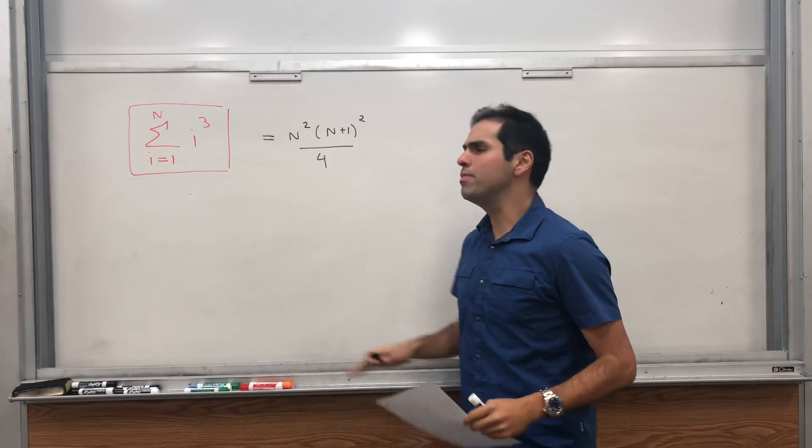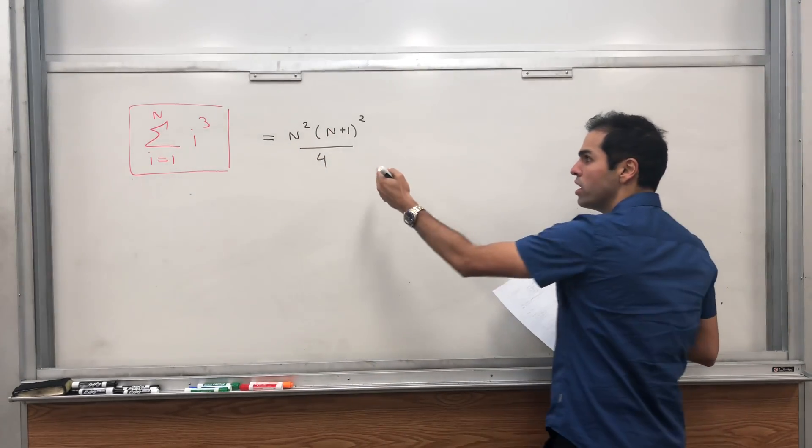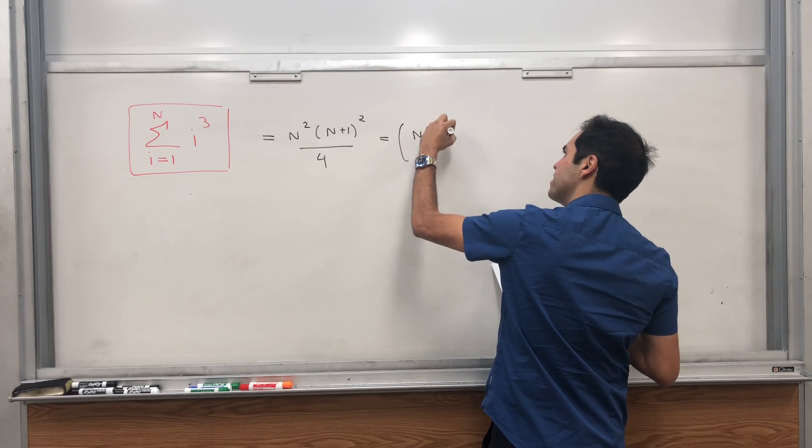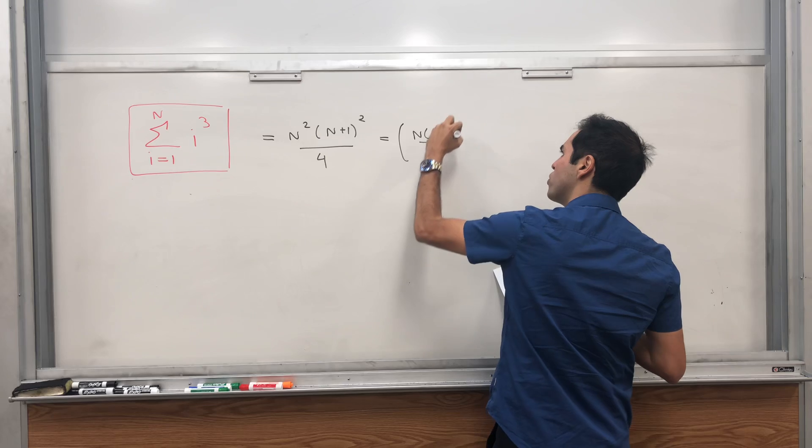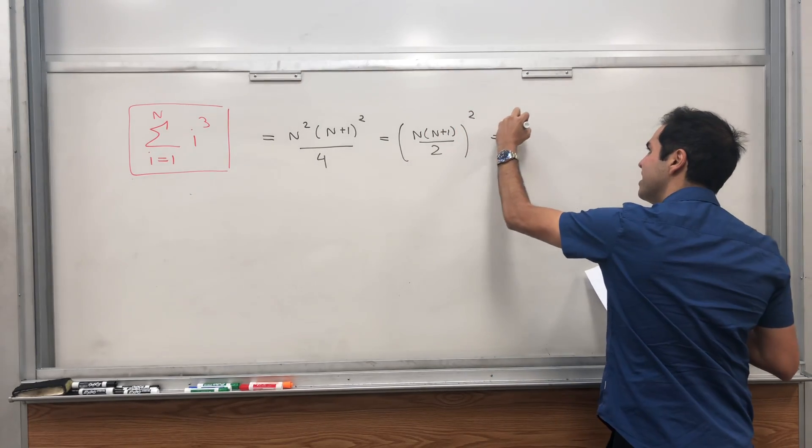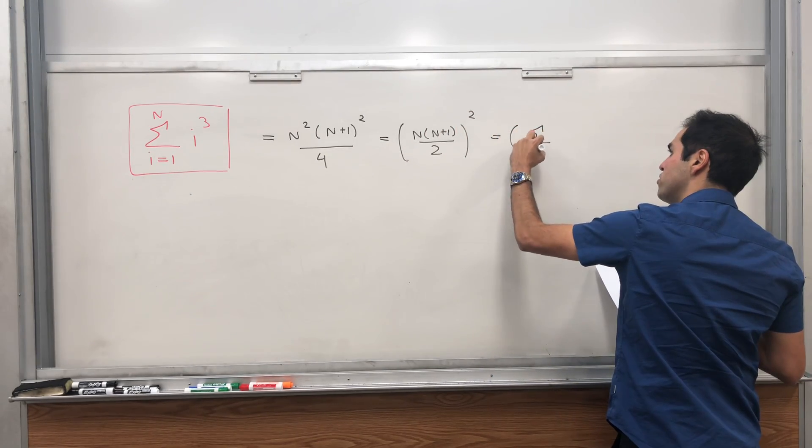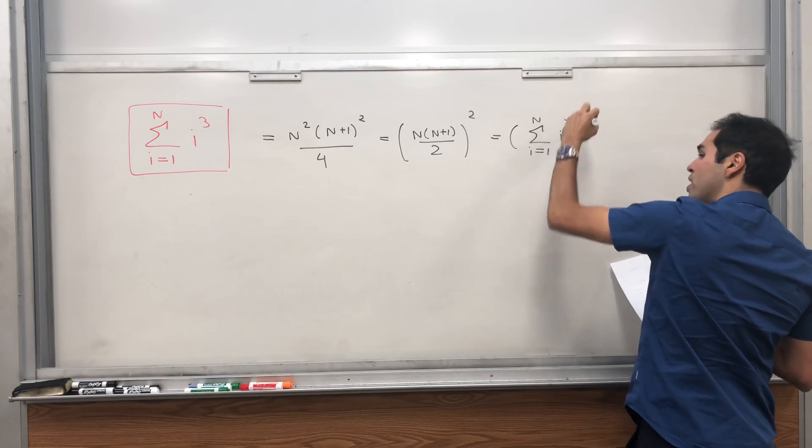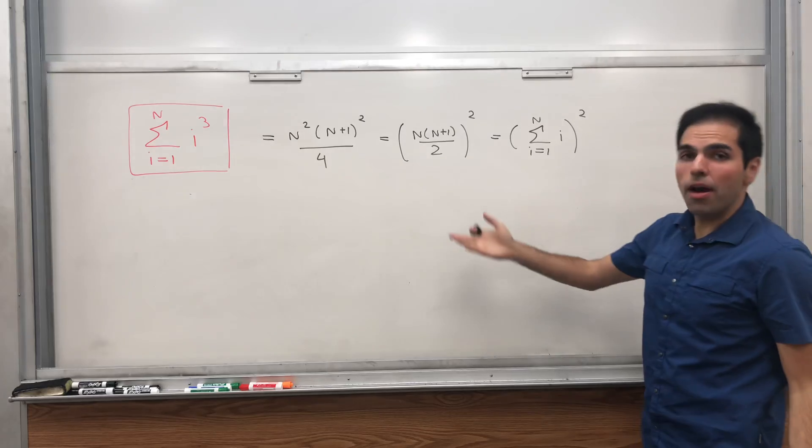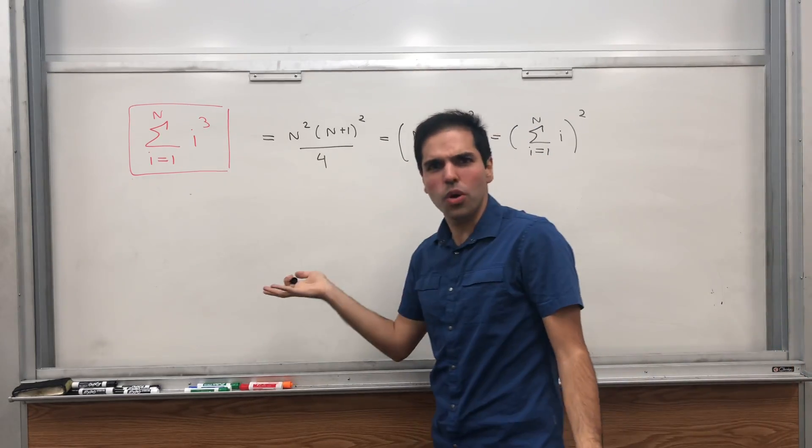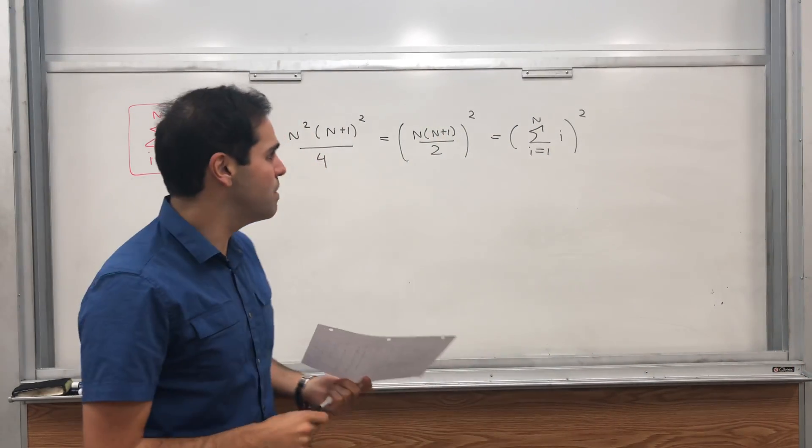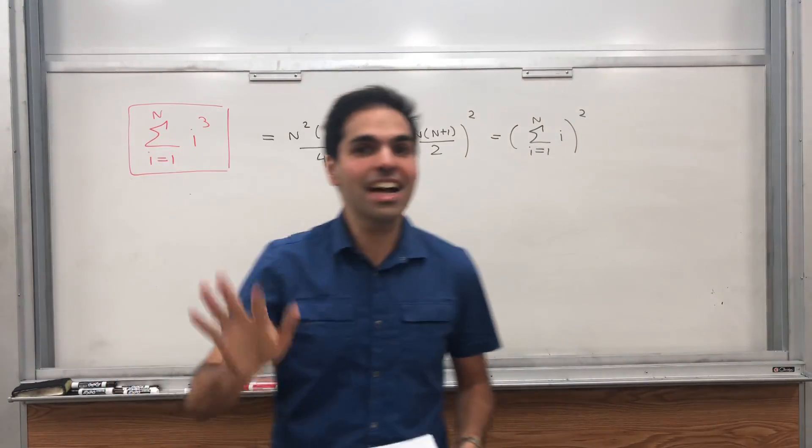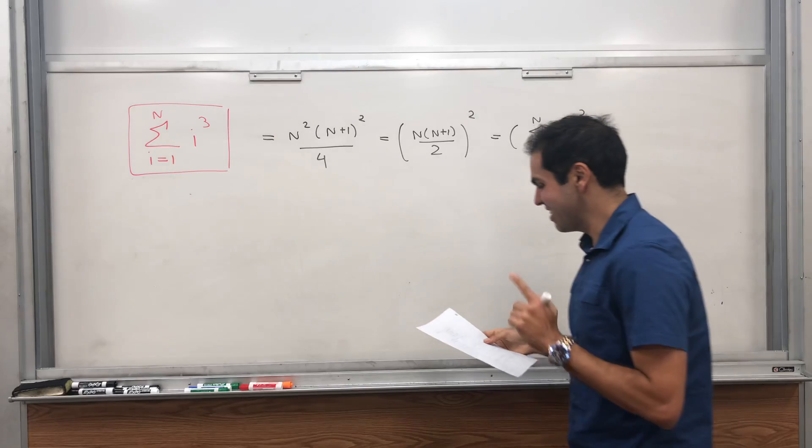But the thing that's been bugging me for years is notice this is actually the same thing as n times n plus 1 over 2 squared, which is precisely the sum of the integers from 1 to n squared. And I'm always wondering, is this a coincidence? Or does this make sense? And in fact, recently I found out it actually makes sense.